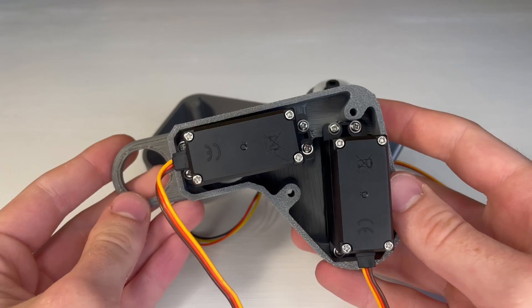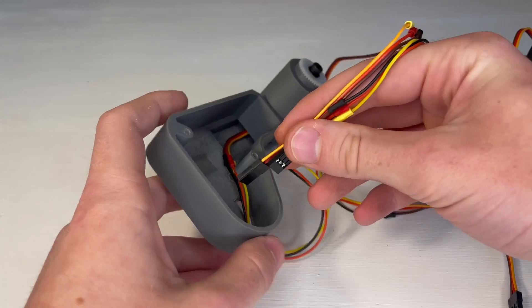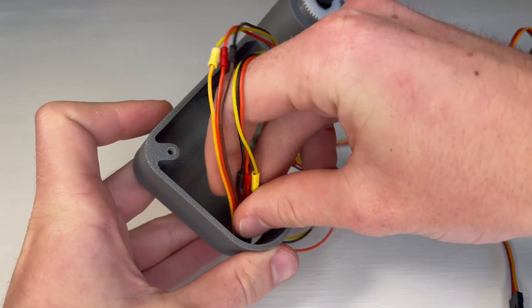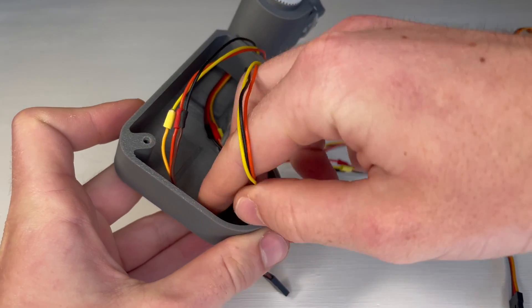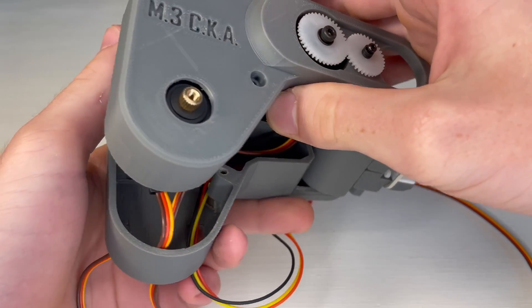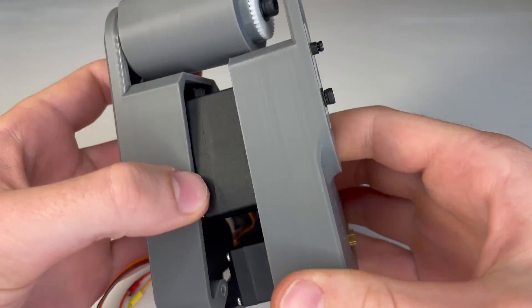Now we will connect the two forearm halves together. First we need to insert all of our servo wires from our first forearm piece into the slot at the bottom of our second forearm piece. Then we can fit the two halves together.